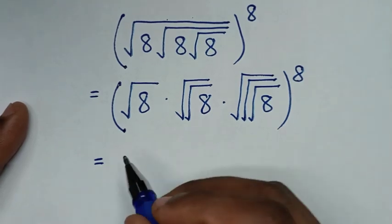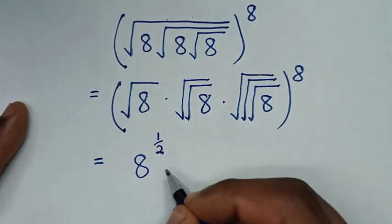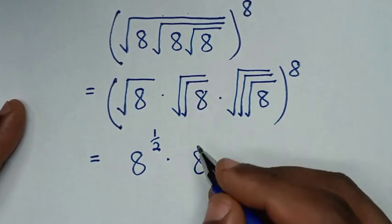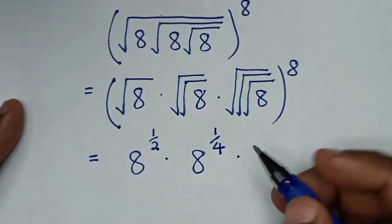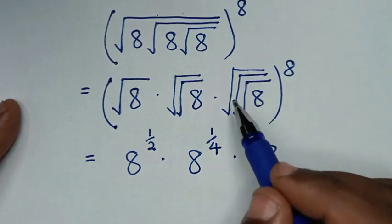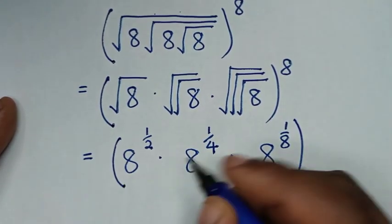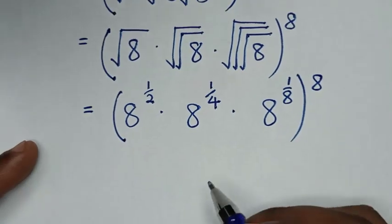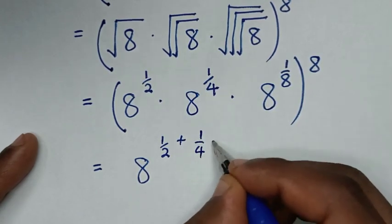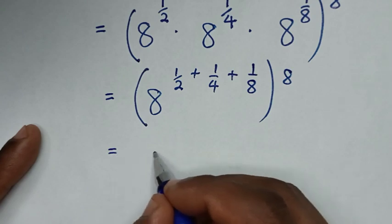In the next step, 8 with square root is the same as 8 power of one half. Then times 8 with square root of square root, which is the same as the fourth root — fourth root is the same as power of 1 over 4. Then times 8 with square root times square root times square root, which is the 8th root, same as power of 1 over 8, bracket power of 8. In the next step it will be equal to 8 — we add these powers — so power of one half plus power of 1 over 4 plus power of 1 over 8, bracket power of 8.